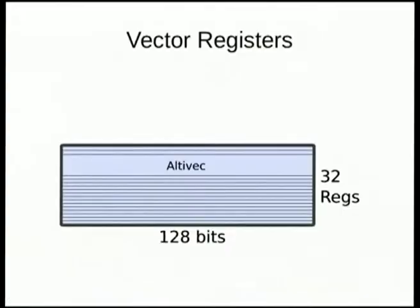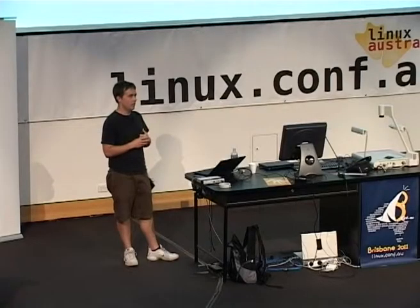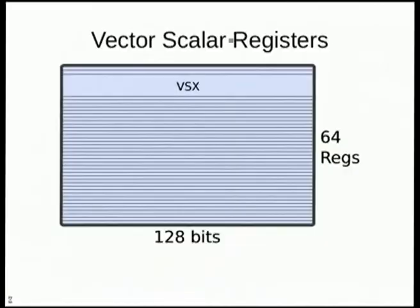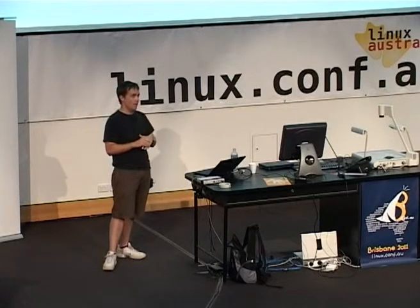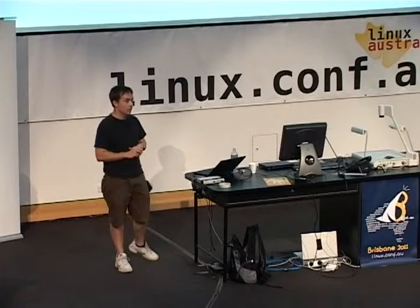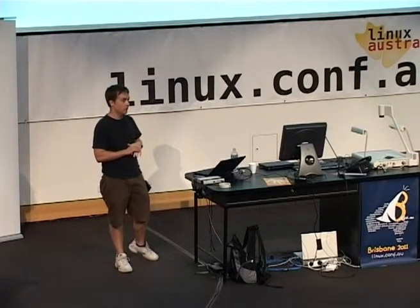We also have vector registers — Altivec registers. There's another 32, but these are 128-bits wide, similar to MMX or SSE on an Intel processor. On Power7, we added the vector scalar registers, the VSX registers, which are 64 128-bit registers. So we're talking about another 1024 bytes worth of extended state that would need to be context-switched for every task.